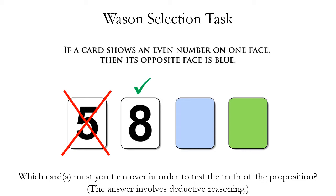Now let's look at the blue card. Do we need to flip that card over to determine the truth of the proposition? The answer is no. The proposition says all even numbered cards have blue on their other side — it does not say that all blue cards have an even number on the other side. That's a different proposition logically. These are called logical converses of each other. The converse of 'if P then Q' is 'if Q then P.' Those are two different propositions — they're not equivalent — and that's why we do not have to flip over the blue card.